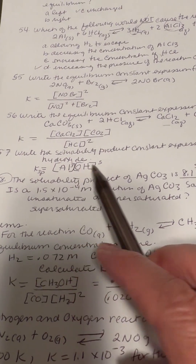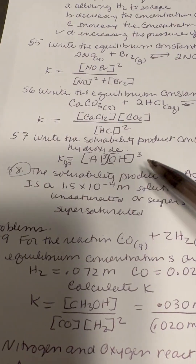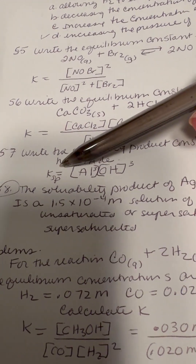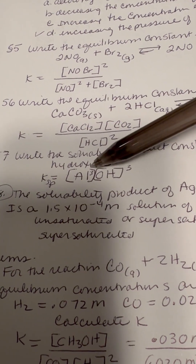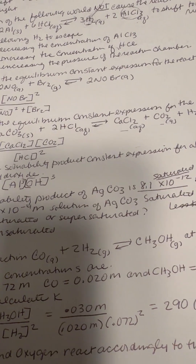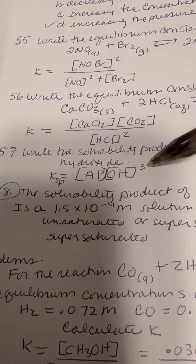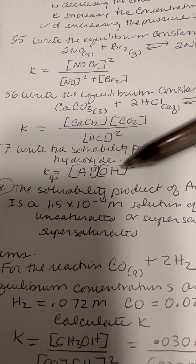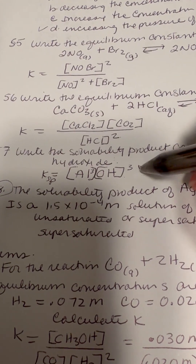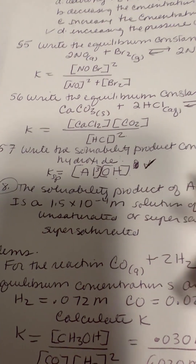Number 57: write the solubility product expression for aluminum hydroxide. Ksp is the solubility product. Aluminum hydroxide is Al(OH)₃. I'm not fully sure about this one, so you can look that up on Google.